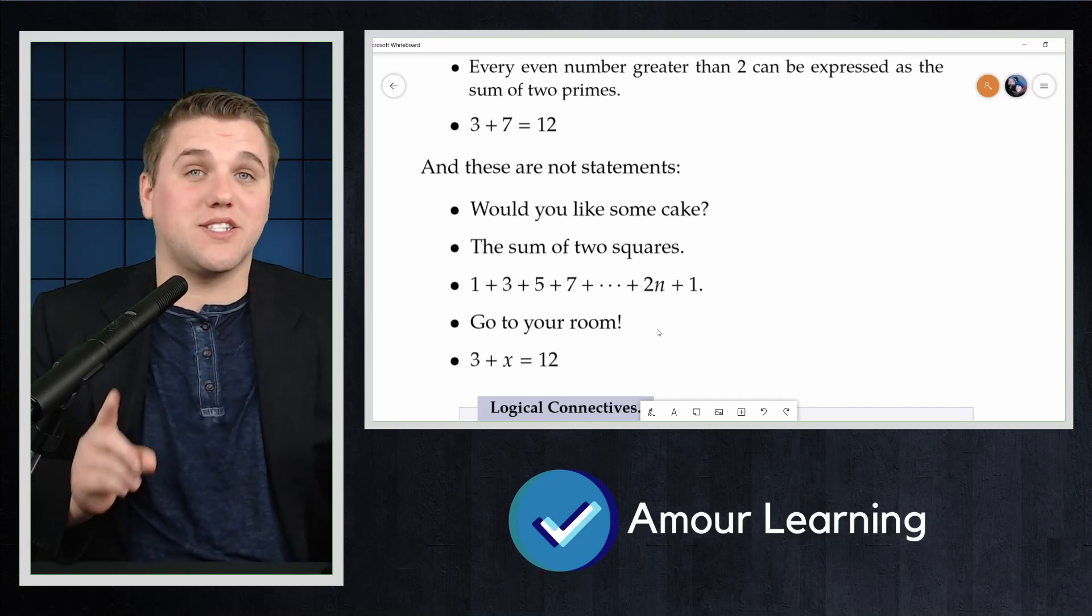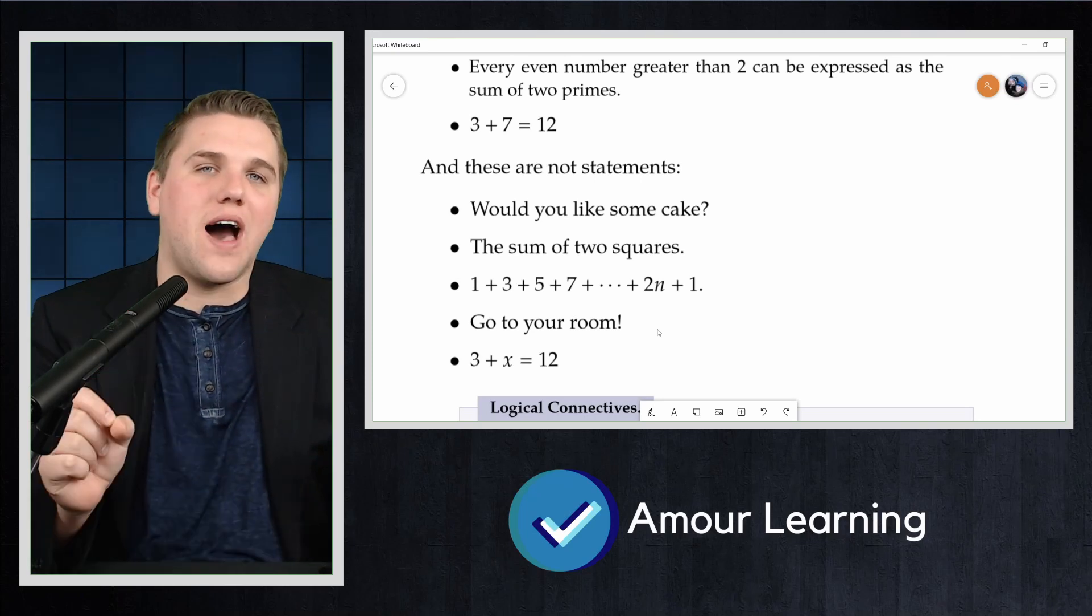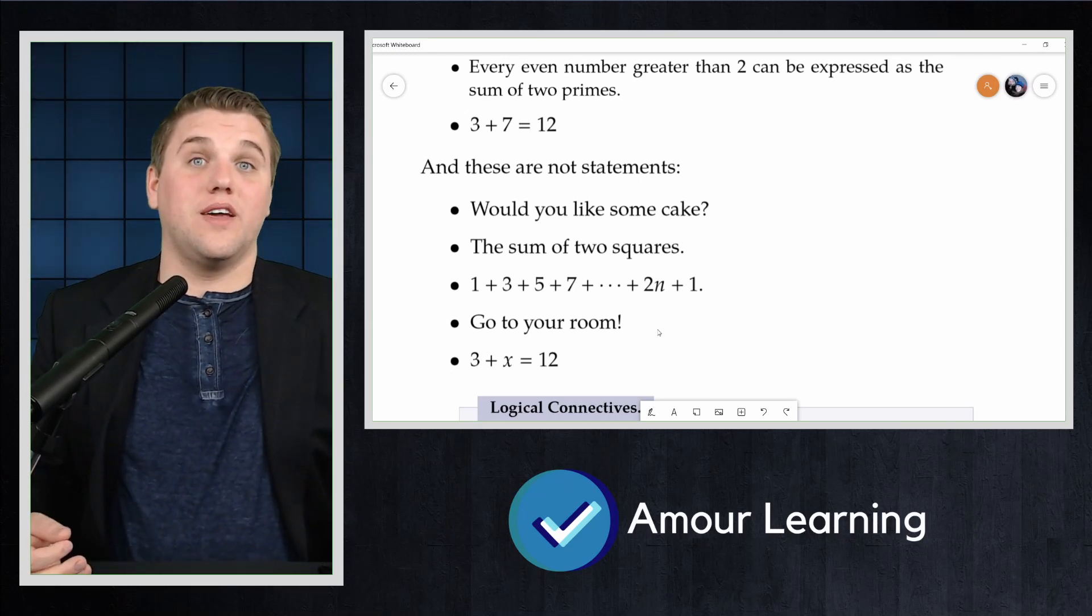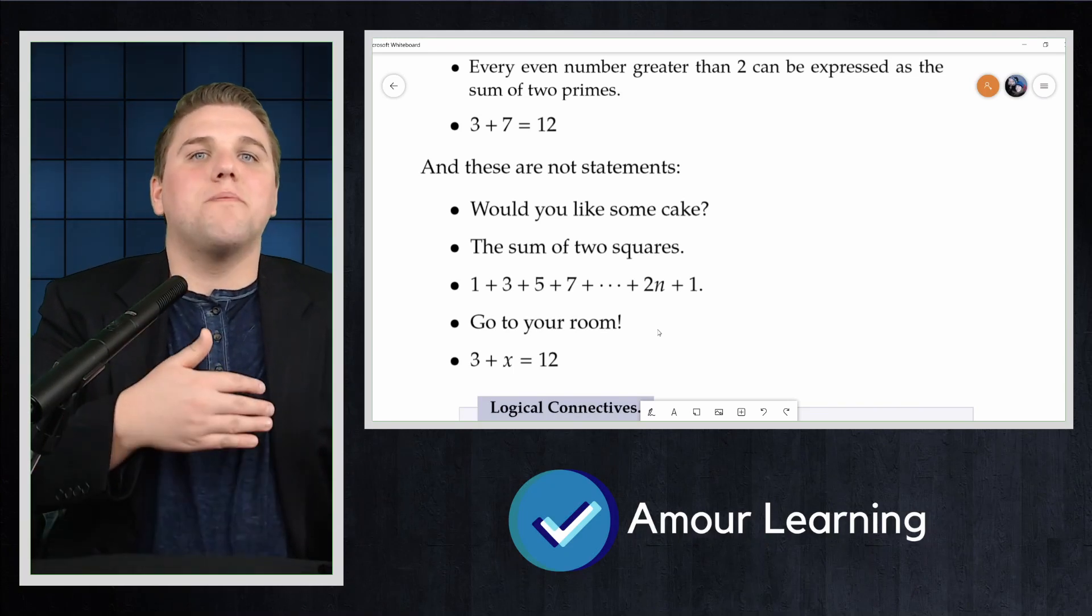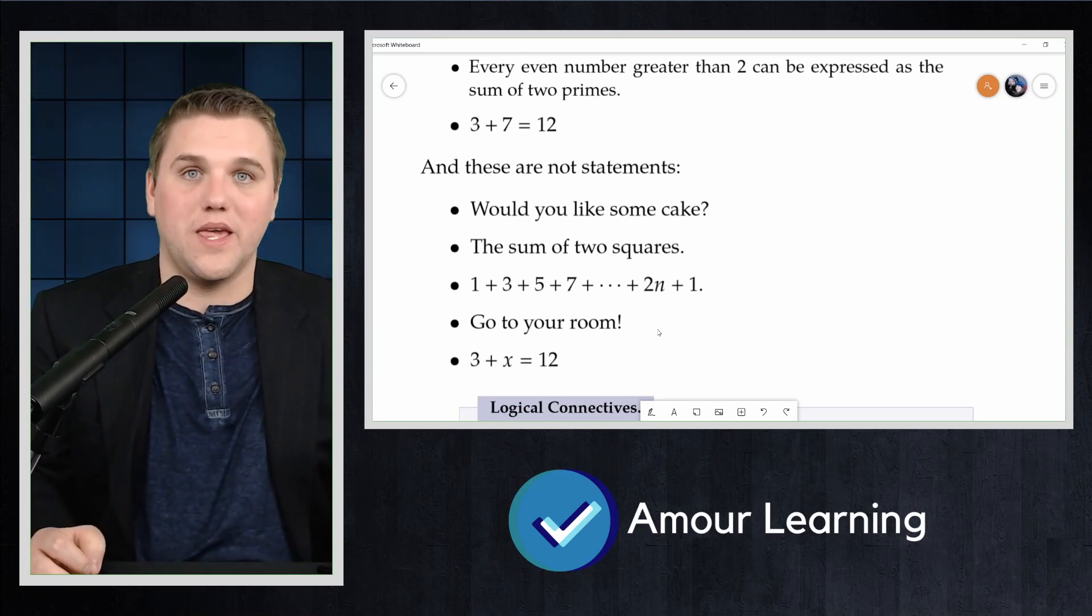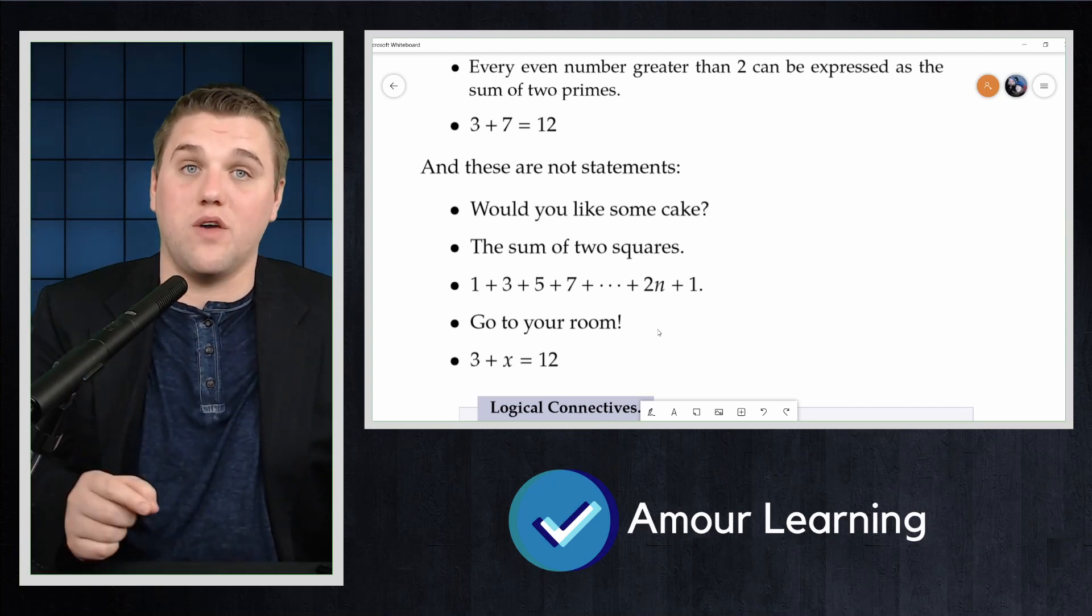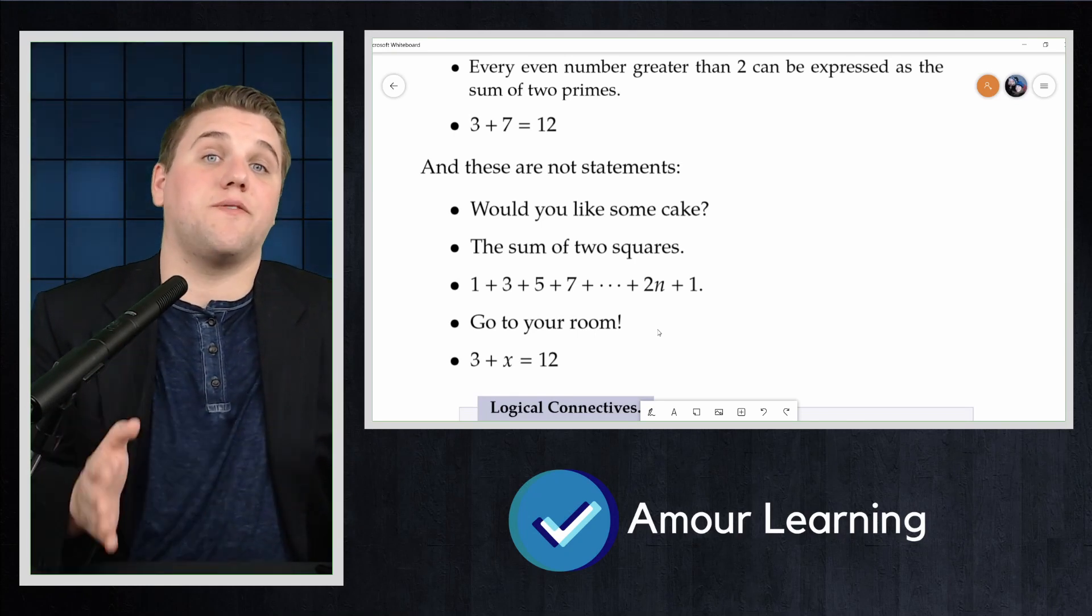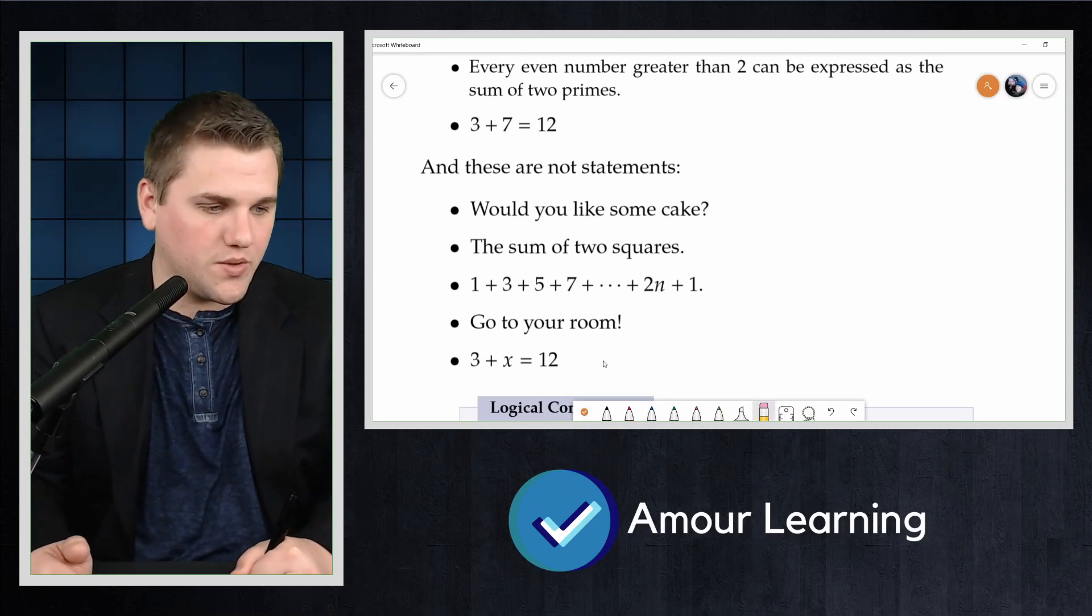The reason the sentence 3 plus x equals 12 is not a statement is because it contains a value x that is not known. It could be that x is a variable. Depending on what x is, the statement is either true or false. But right now it is neither one definitively. One way to make the sentence into a statement is to specify the value of x in some way. This could be done by specifying a specific substitution. For example, 3 plus x equals 12 where x equals 9.